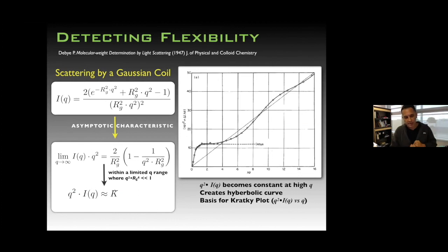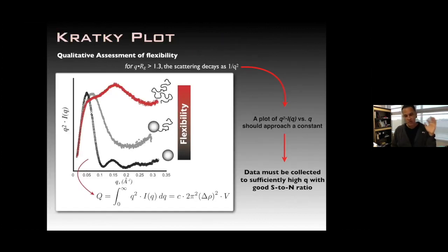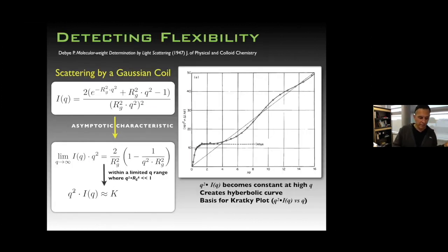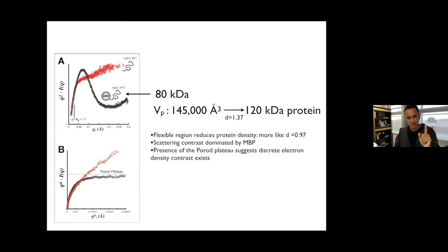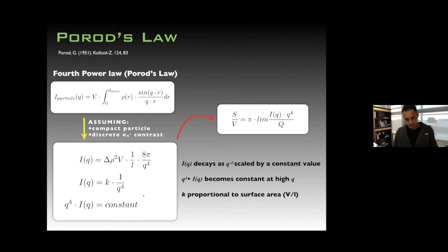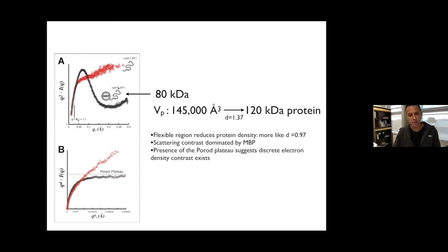Debye predicted that if you plot intensity against q² it should approach a constant for a Gaussian coil, while Porod predicted for a compact particle q⁴·I(q) should approach a constant. The Porod-Debye exponent goes between 2 and 4. You find the region in the data and fit it to get the exponent. For RAD51AP1 attached to maltose-binding protein, the Kratky plot shows severe lack of convergence for the intrinsically disordered protein, whereas when attached to the compact discrete particle you see some convergence.